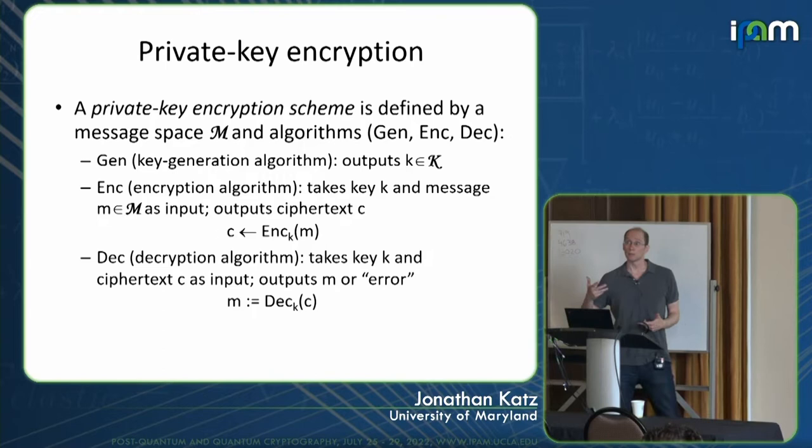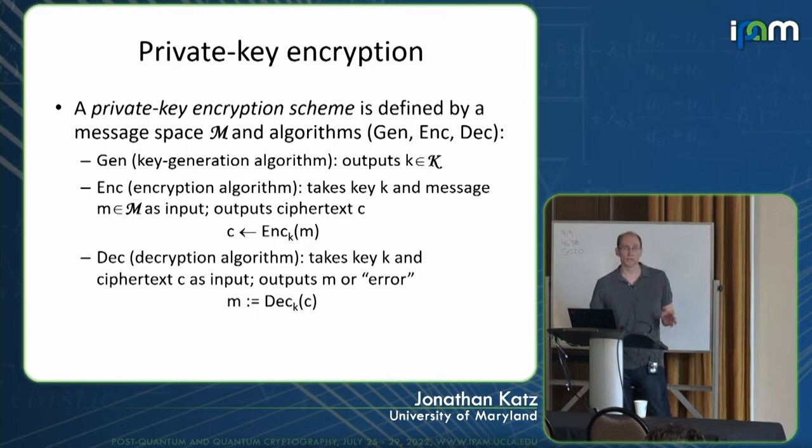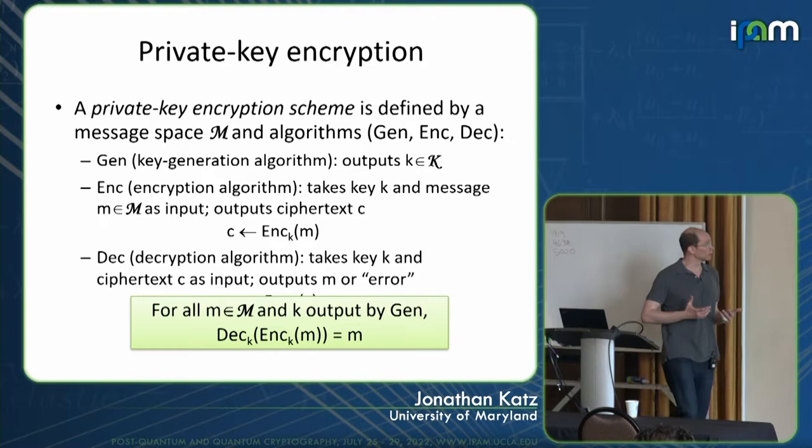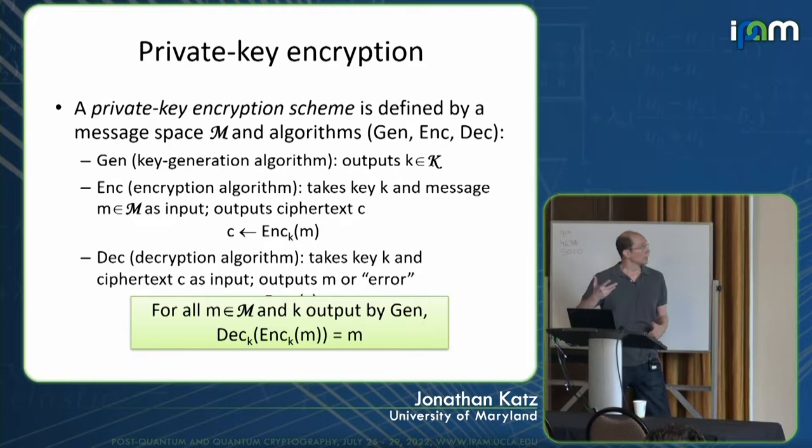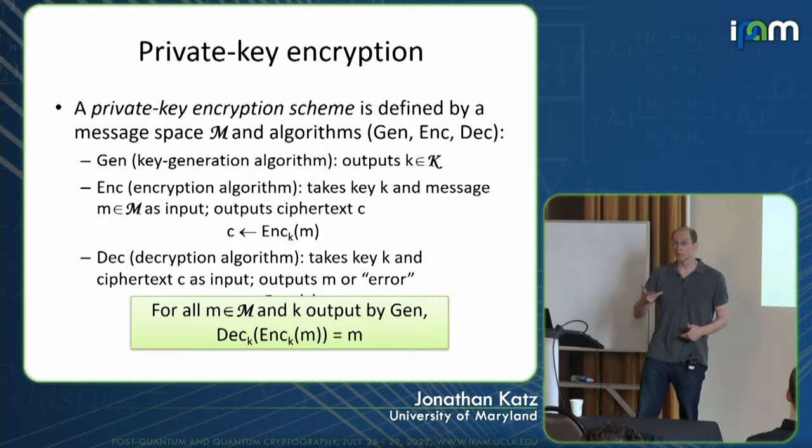We want a basic correctness criterion: this encryption scheme should allow Alice to recover the message that Bob sent. Namely, for every message in the message space and every key output by the key generation algorithm, if you encrypt M using key K, then regardless of what ciphertext you get out, when you decrypt that ciphertext using the key, you should recover the original message.